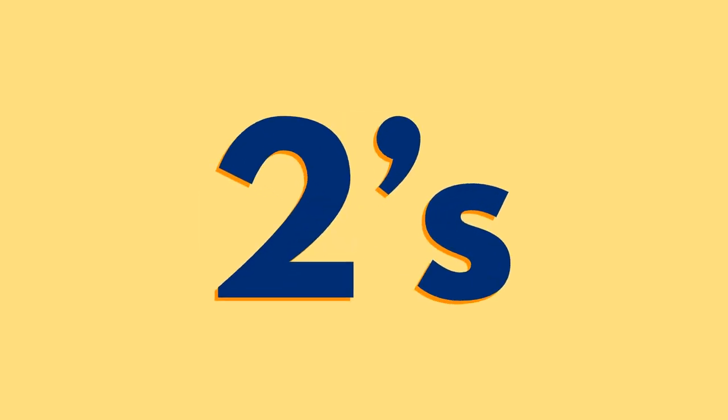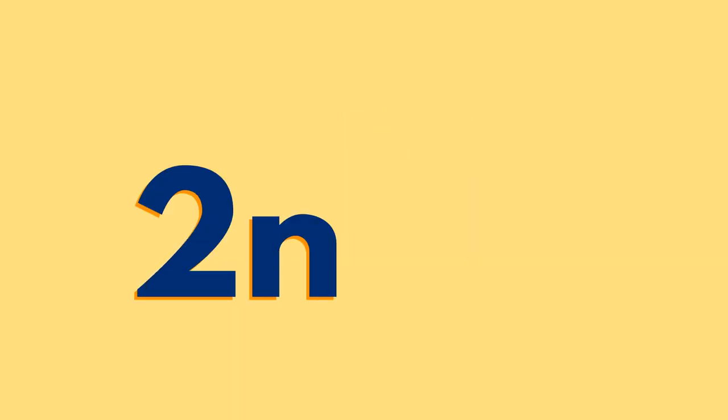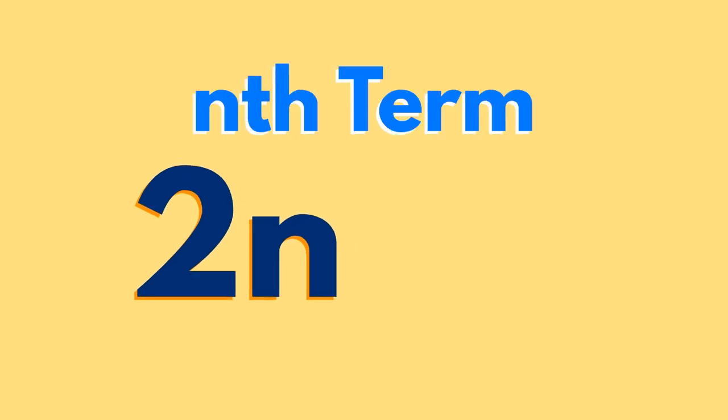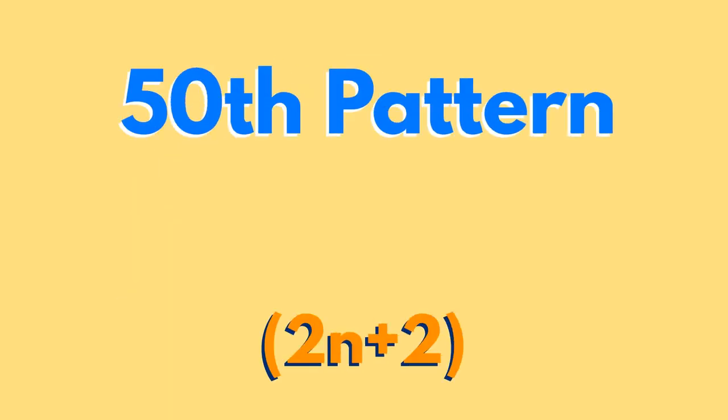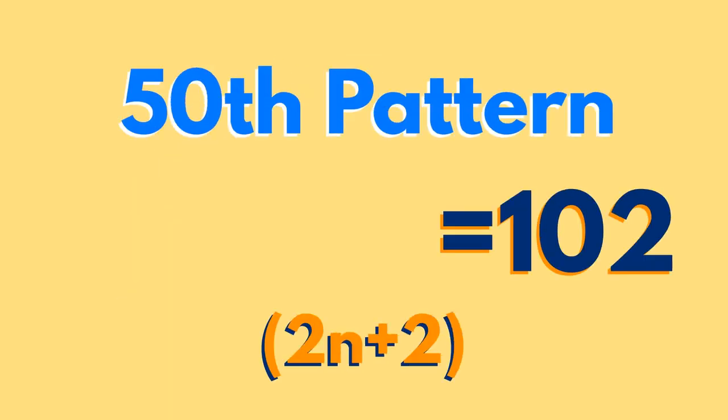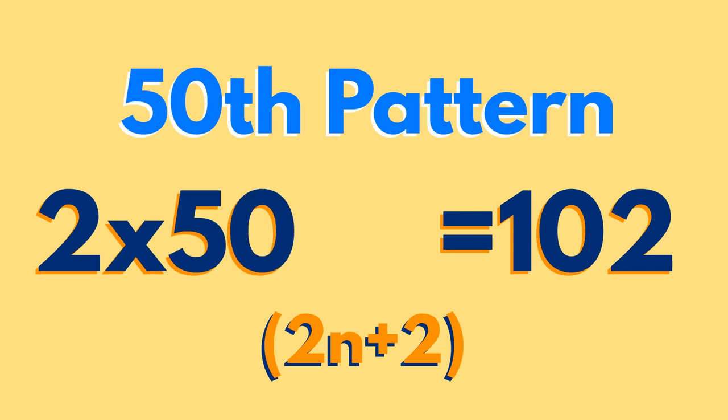As you are going up in twos, the first part is 2n. Notice how you always add 2, the n squares. The nth term is therefore 2n plus 2. The 50th pattern would be 102 blue squares, or 2 times 50 plus 2.